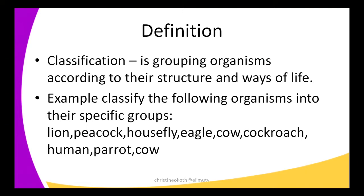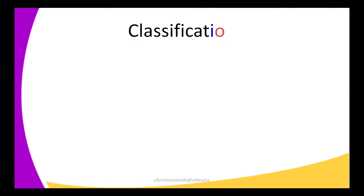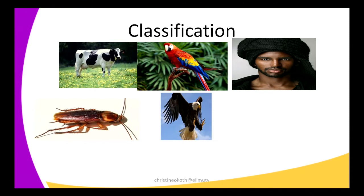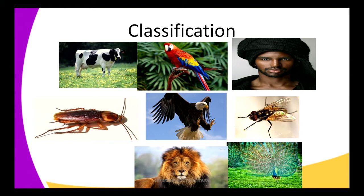For example, I have a lion, peacock, housefly, eagle, cow, cockroach, human, and parrot. We are going to classify these organisms using the two main things we have used to define classification — their structure and how they live.